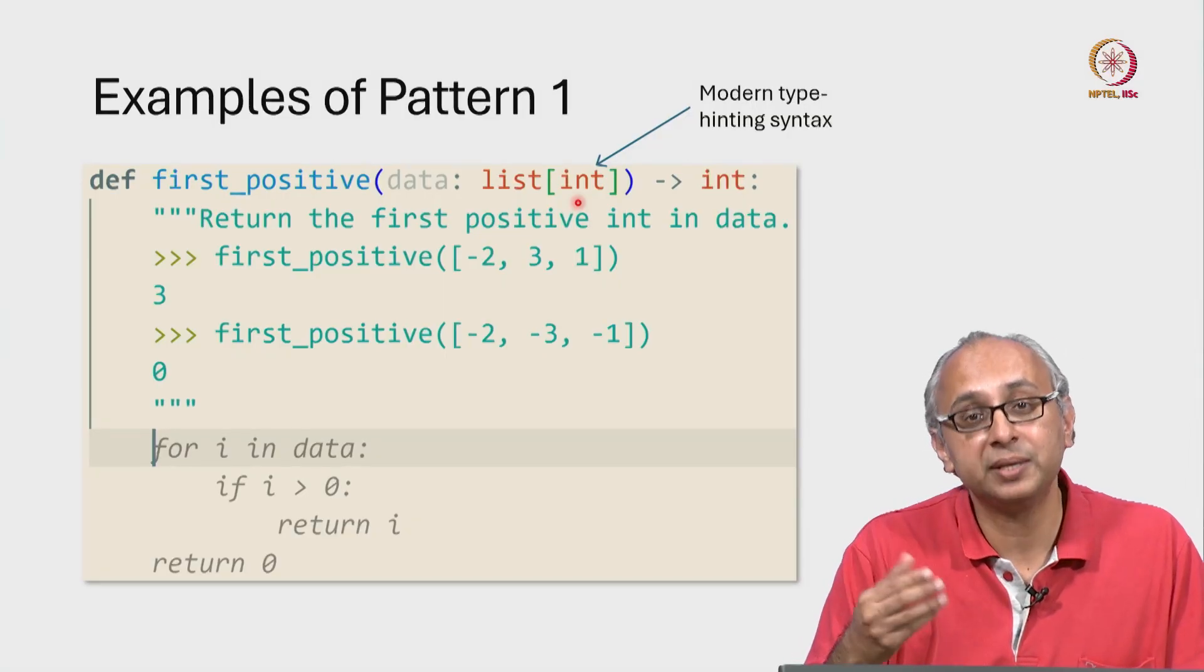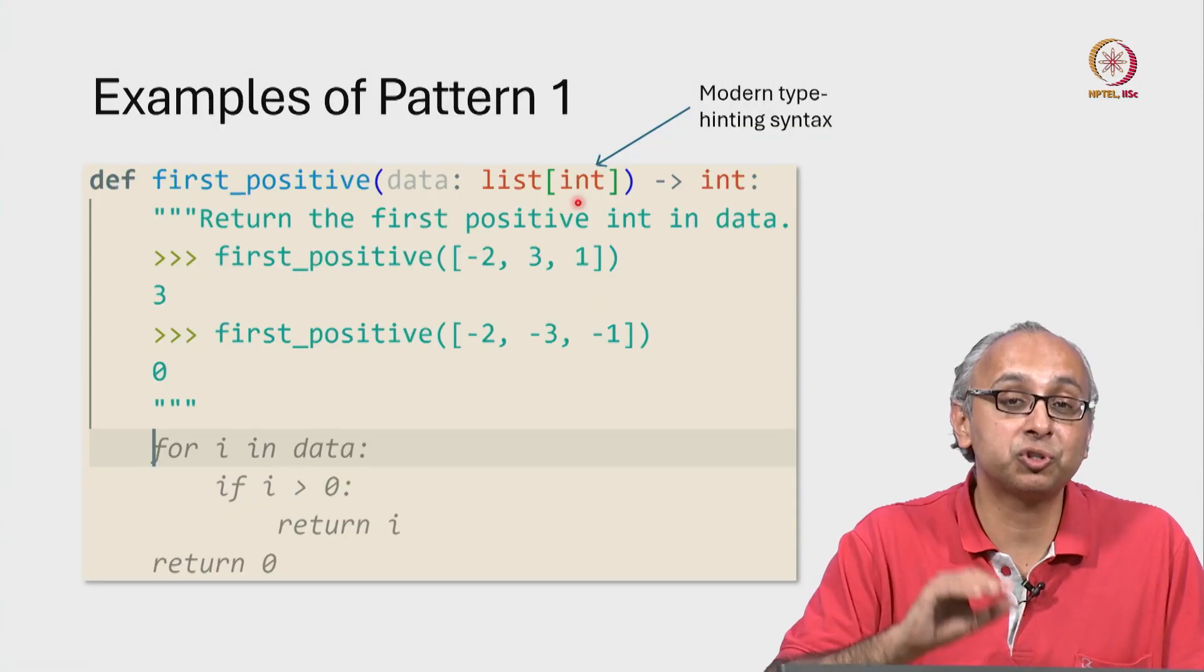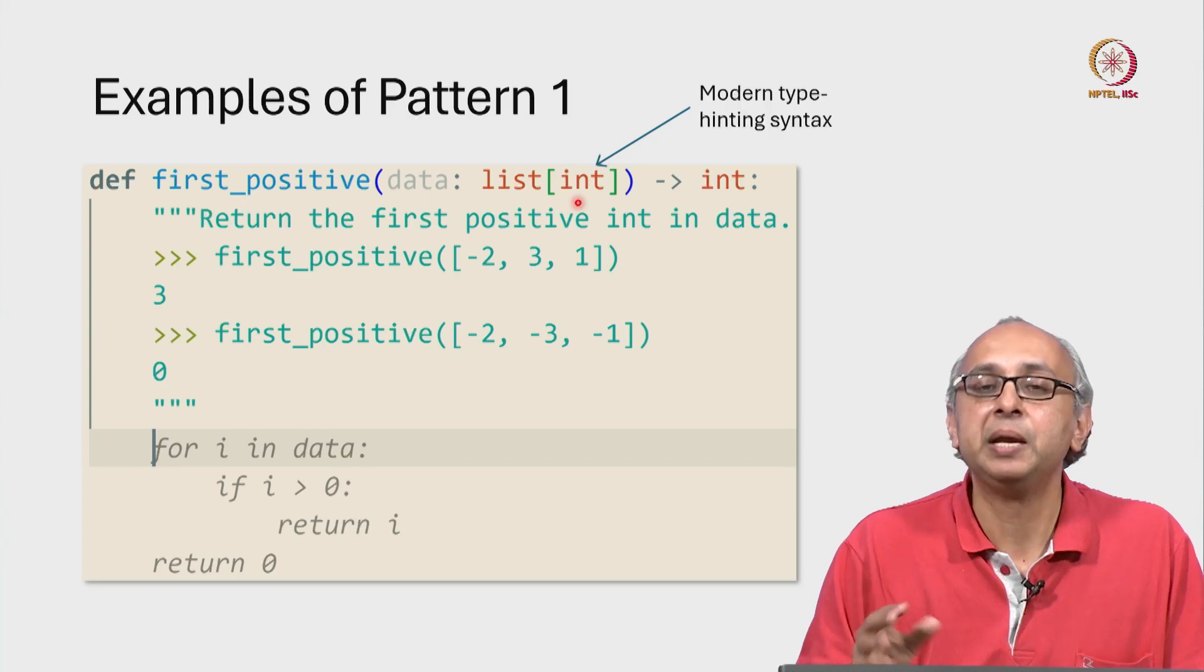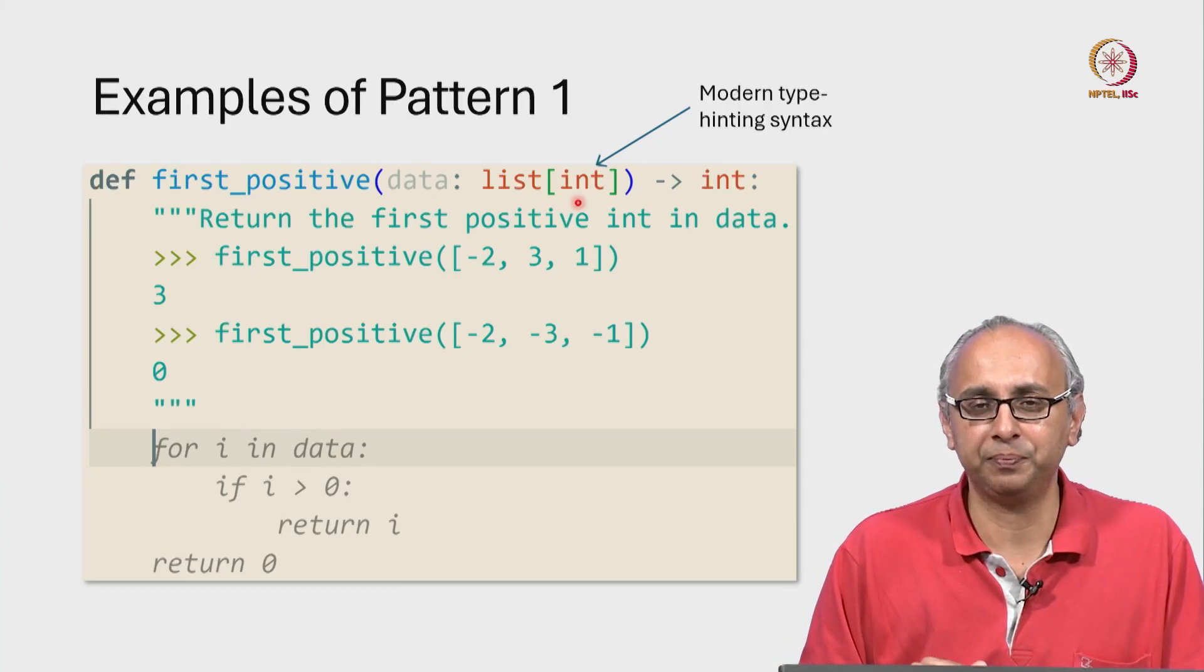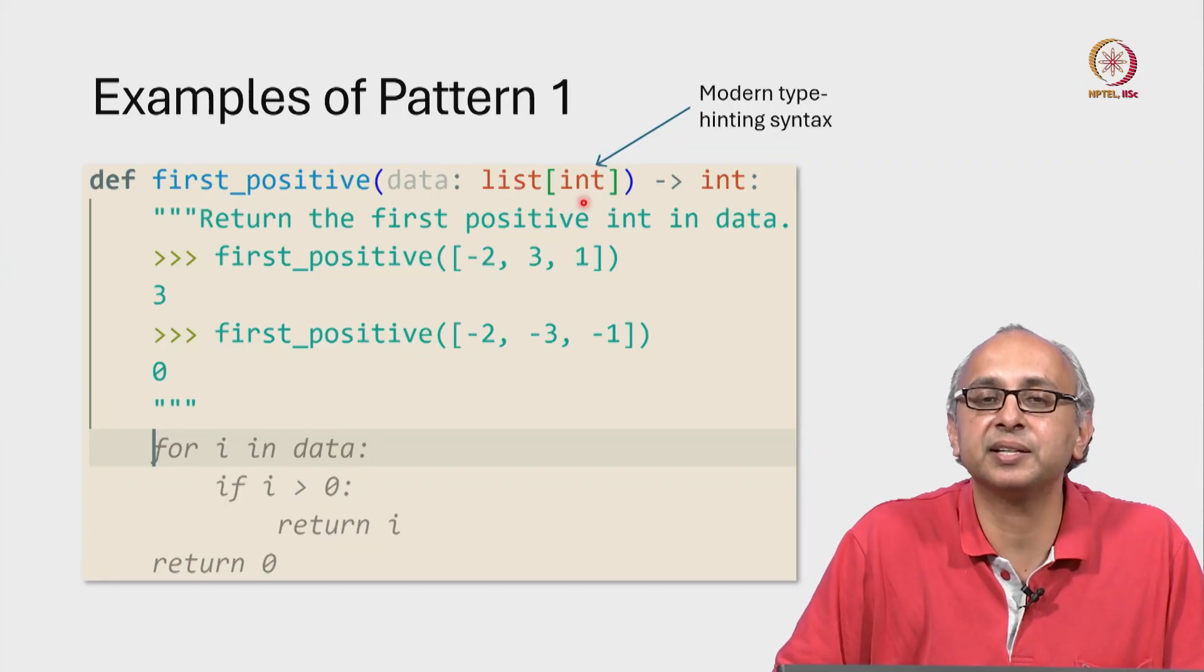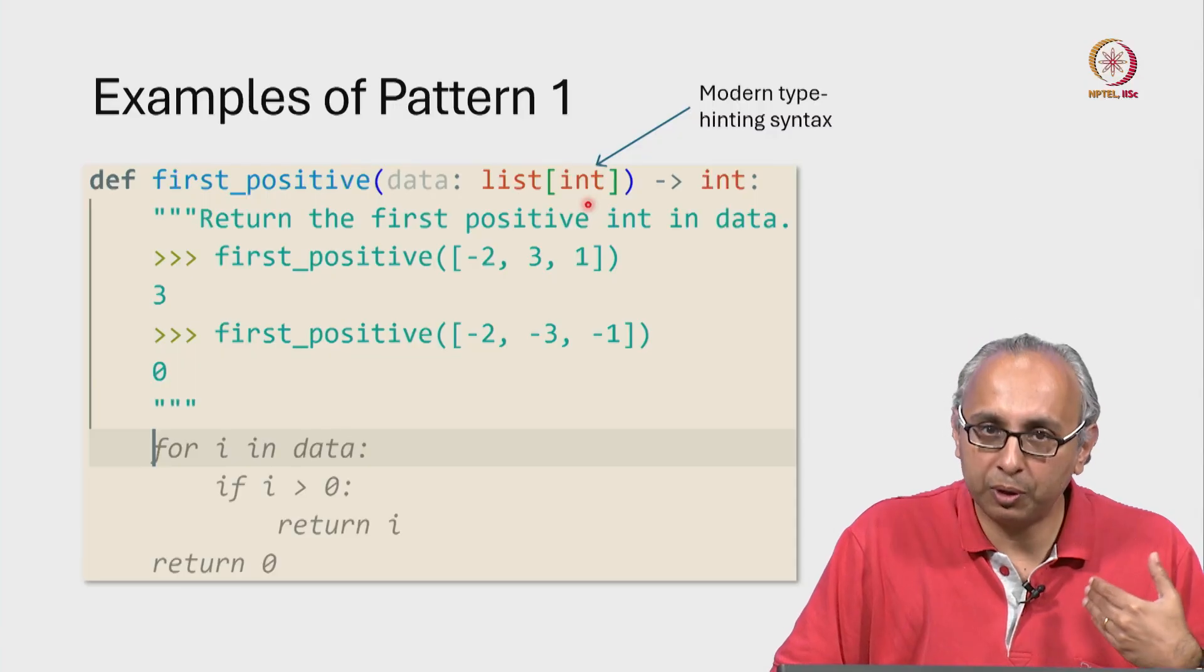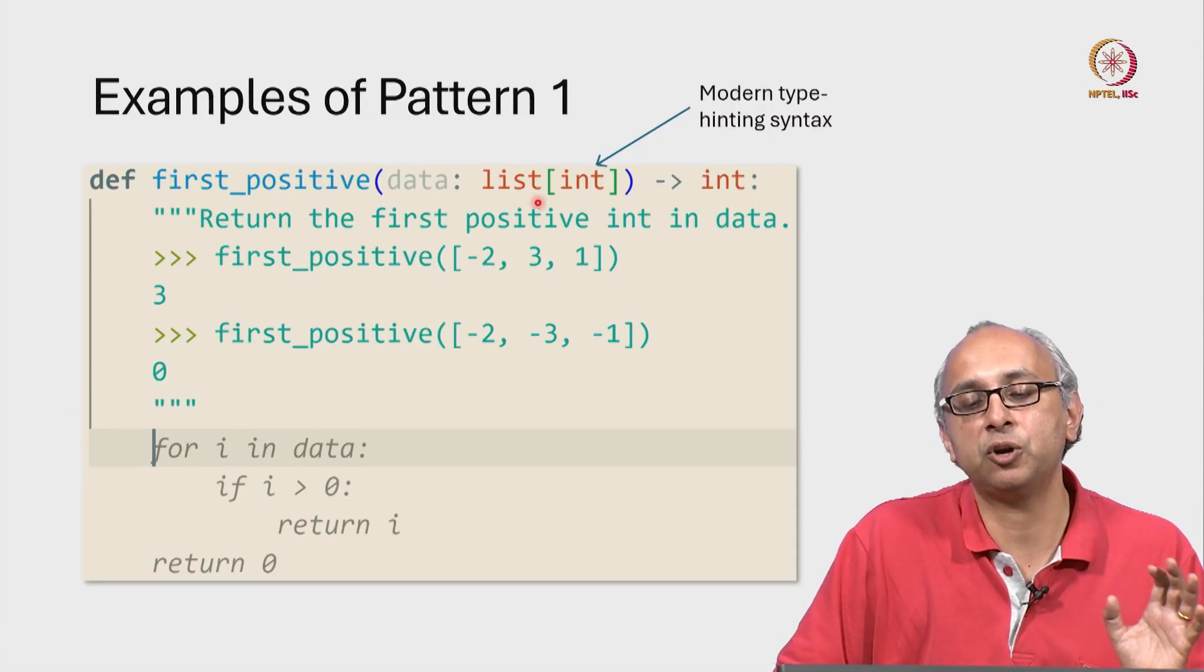Now remember, type hinting is merely a hint. Nobody is going to stop you from actually calling this function with a heterogeneous list. But in this course, here is the convention you and I will adopt. If we have said that the parameter of a function has a certain type, then we will respect that type. So we're going to assume that this function is only called with a list of integers.